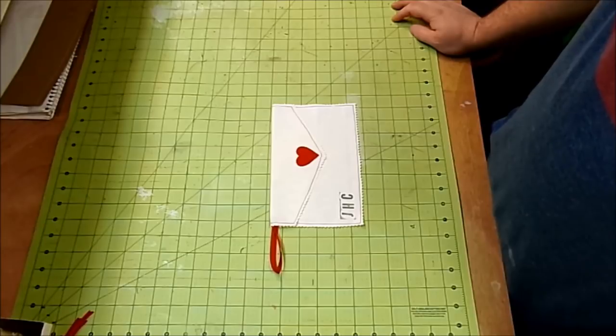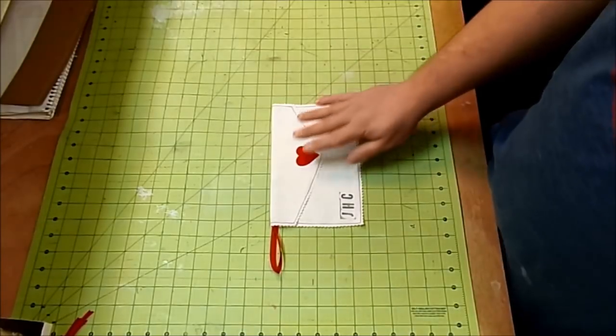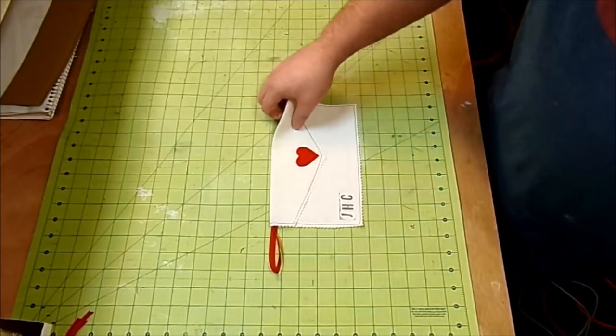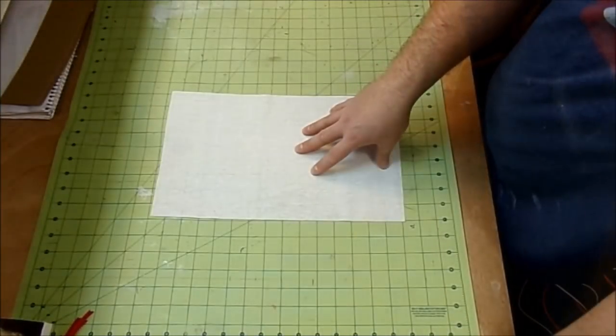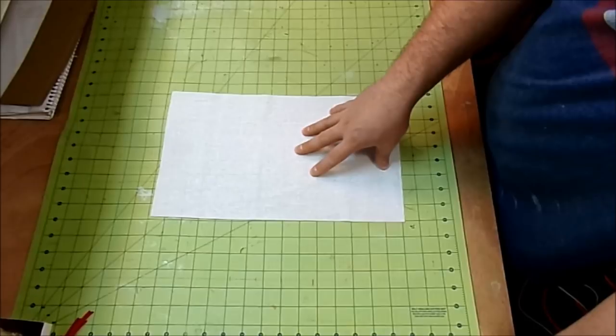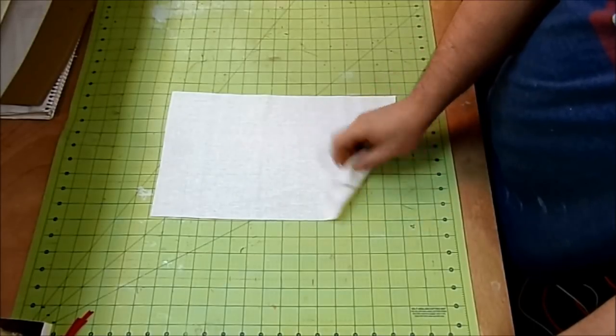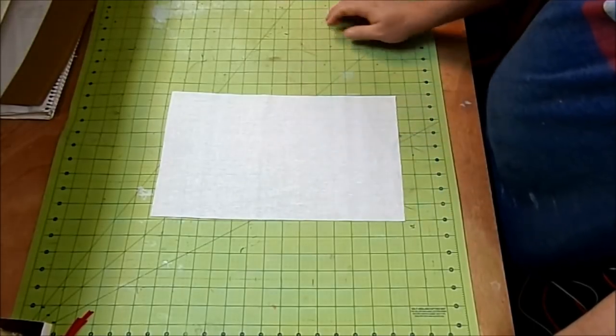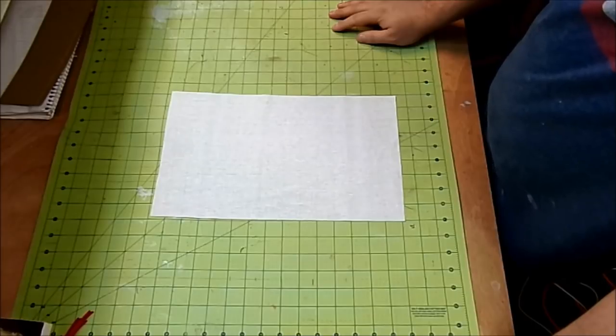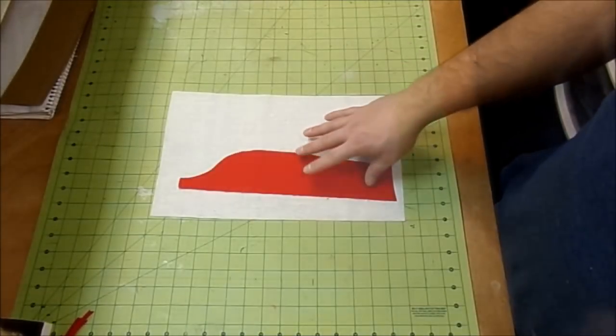The things that you're going to need to make this fabric envelope are one piece of fabric that measures 15 inches by 9 inches. I'll be using a mid-weight canvas today, but you can certainly use any fabric that you'd like. You're gonna need a scrap piece of red fabric for the little heart here.